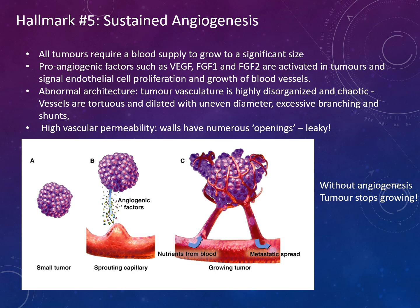Hallmark number five is sustained angiogenesis. Tumours require a blood supply to grow to a significant size. Pro-angiogenic factors such as VEGF, FGF1, and FGF2 are activated in tumours and signal endothelial cell proliferation and growth of blood vessels. Tumour vasculature is disorganised and chaotic — vessels are tortuous and dilated with uneven diameter, excessive branching, and shunts. There is also high vascular permeability, meaning the walls are leaky. Without angiogenesis, tumours stop growing.